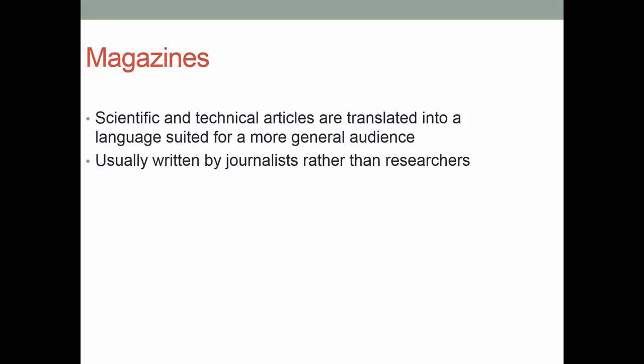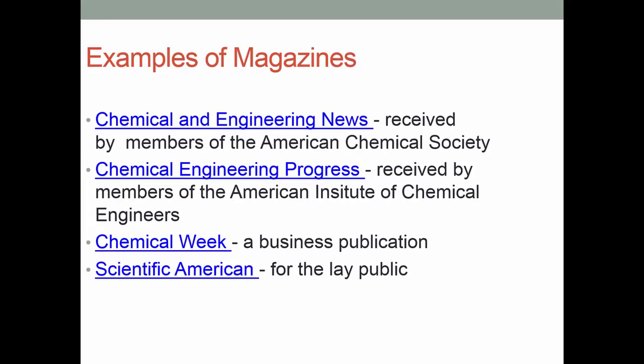Magazines translate research into more general language suited for a broader audience, and very often these articles are written by journalists rather than researchers. Some magazines are suitable for practicing scientists; others are for the general public. Chemical and Engineering News is published by the American Chemical Society. Chemical Engineering Progress — if you're a member of the AIChE, you'll get that. Chemical Week is more of a business publication, since scientists and engineers often need to know what's going on in their business. Scientific American is an example of a magazine for the general public.